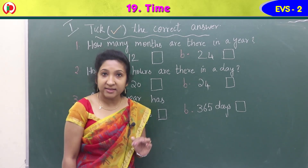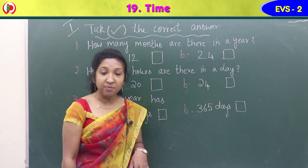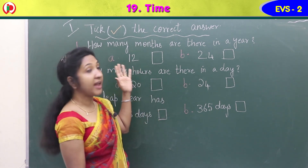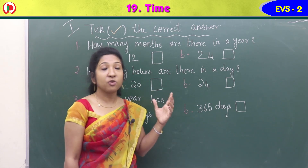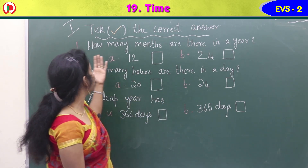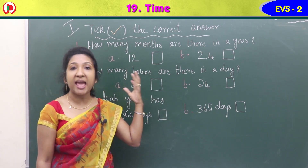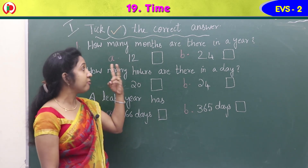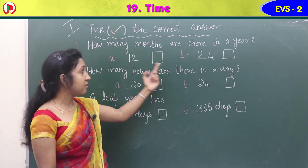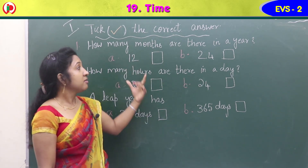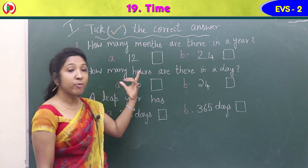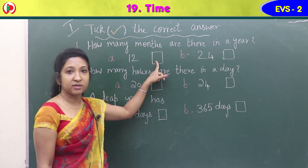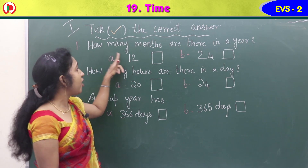Children, it's our exercise time. There are some exercises in the workbook for lesson 19 on time. The first exercise is: tick the correct answer. There are three questions given, with two options for each question. Check the option which is the correct answer and give a tick in the square box.